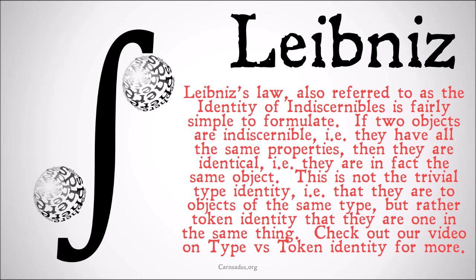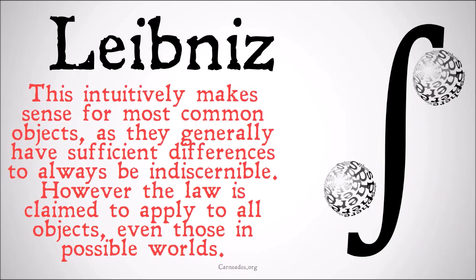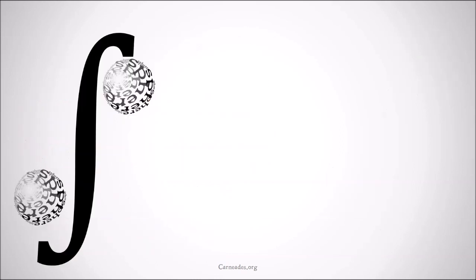Check out my video on type versus token identity for more. This intuitively makes sense for most common objects, as they generally have sufficient differences to allow them to be indiscernible only if they are identical to each other. However, the law is claimed to apply to all objects, even those in possible worlds.